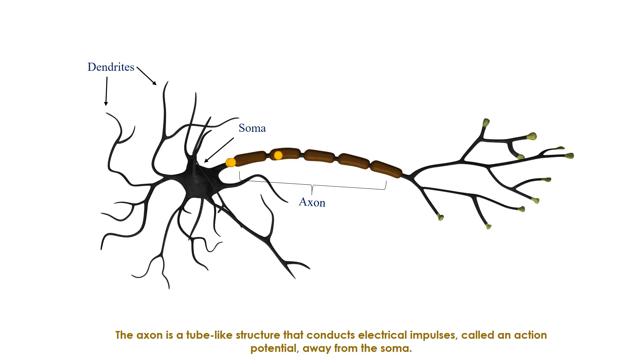The axon is a tube-like structure that conducts electrical impulses, called an action potential, away from the soma. The axon helps transmit information to different neurons.